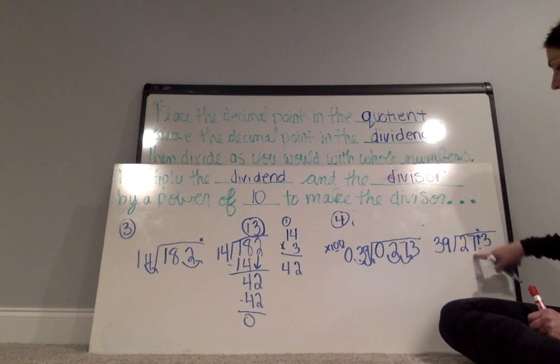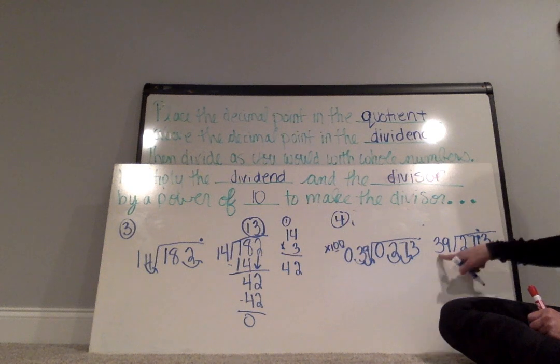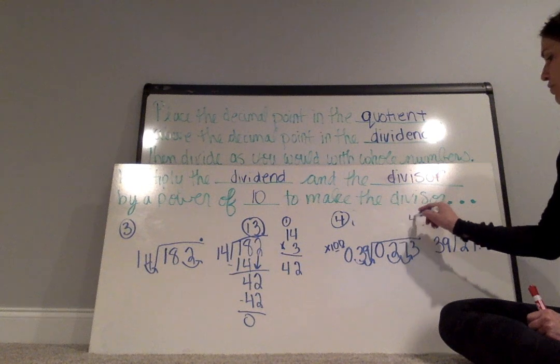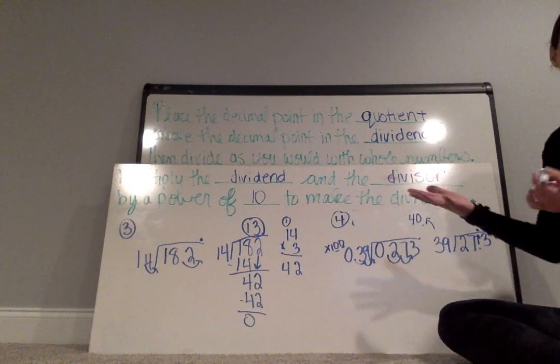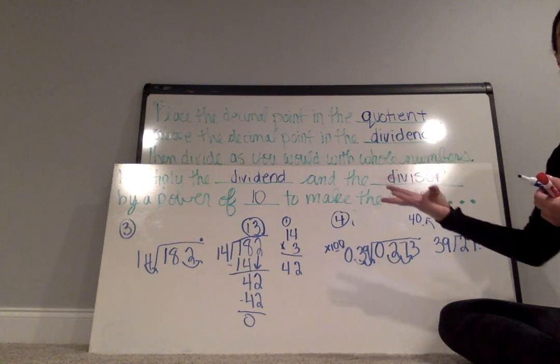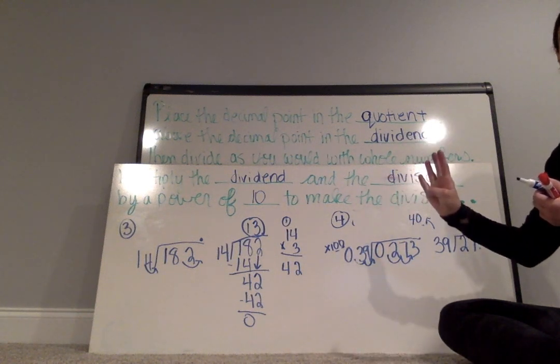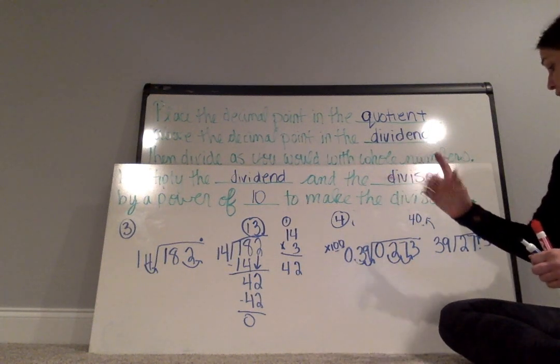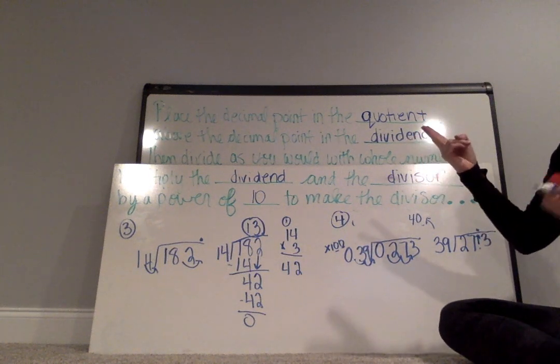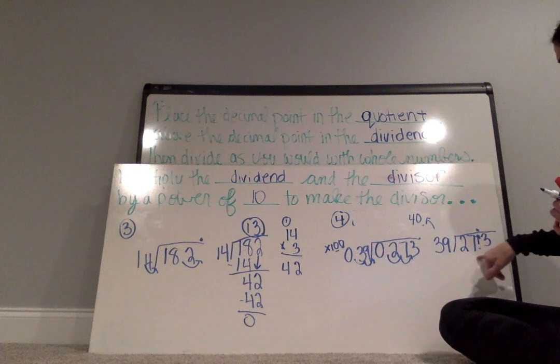So 27 cannot be divided by 39. So I'm going to estimate here. 39 is close to 40. So I'm going to count my multiples. 40, 80, 120, 160, 200, 240, 280. So I have 7 times.